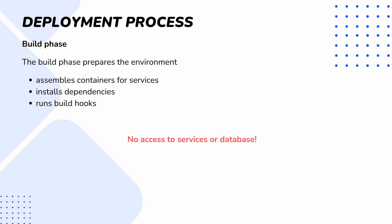Let's go over each of these phases. The first phase is the build phase and it prepares the environment. It assembles containers for the services defined in the configuration files, then it installs dependencies based on the composer lock file, and then runs the build hooks defined in the .magento.app.yaml file. But there is no ability to connect to any services or access the database.